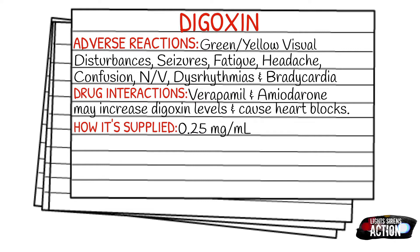Drug interactions: Verapamil and amiodarone may increase digoxin levels and cause heart blocks. How it's supplied: it is supplied in 0.25 milligrams per milliliter.